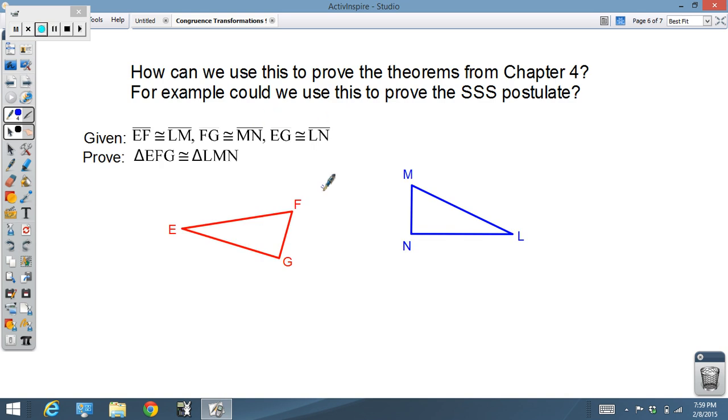How would we prove, now, the theorems from Chapter 4? So, for example, could we use this idea to prove the SSS postulate? So, if we're given that these three sides, EF is congruent to LM, and FG to MN, and EG to LN. So, could we use these ideas to prove that these two figures are congruent?